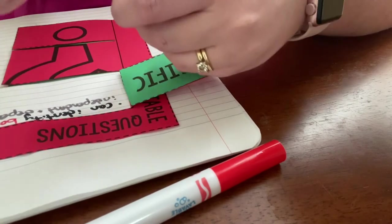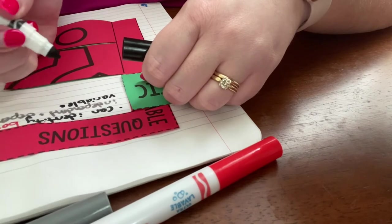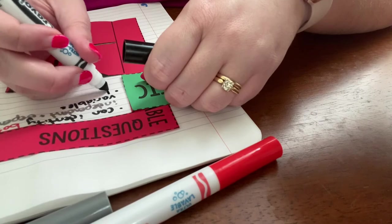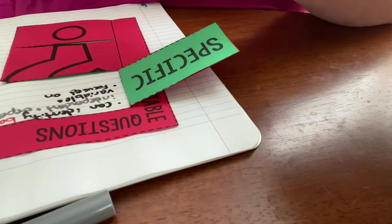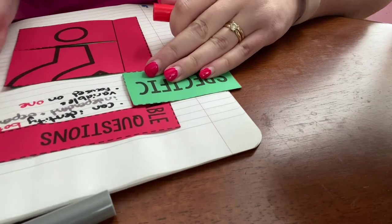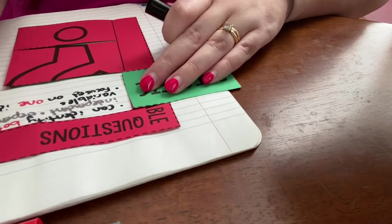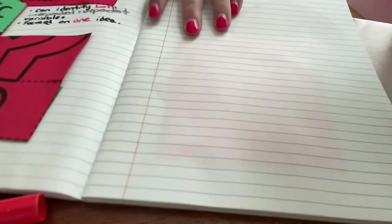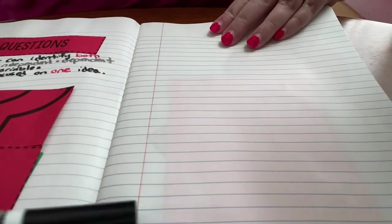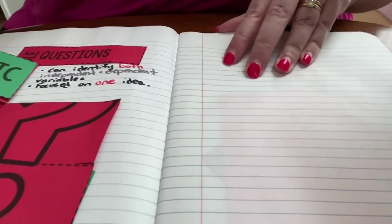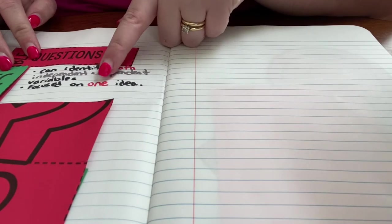And we're going to do another bullet point. This is focused on one idea. We're going to do that in red. So again, if a testable question is specific, it identifies both the independent and dependent variables and is focused on one idea.